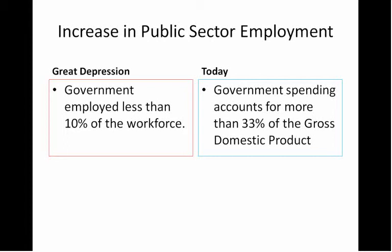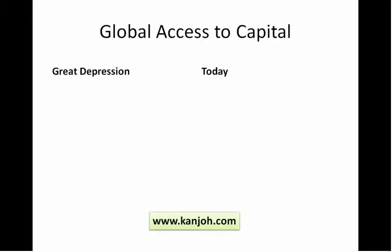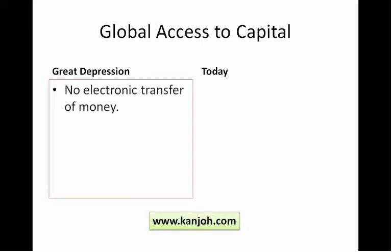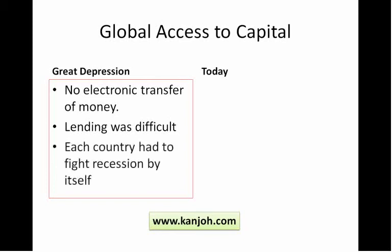Finally, today we have global access to capital. During the Great Depression, there was no electronic transfer of money, and as a result, lending was very difficult — it had to be done largely by hand, with ledgers and personalized accounts. The direct result of this was that each country had to fight recession by itself. It's not like you could go to Chinese investors and borrow money to finance U.S. growth. That wasn't really something that could happen back then.